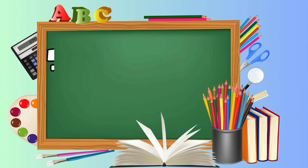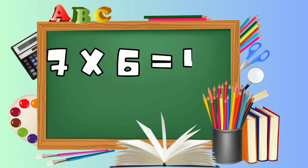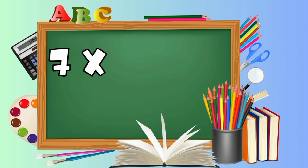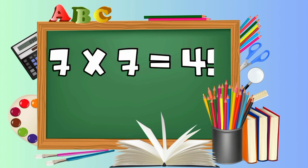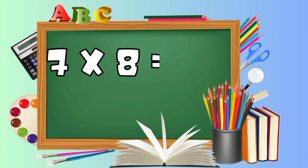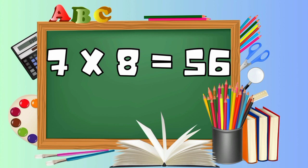7 5's are 35. 7 6's are 42. 7 7's are 49. 7 8's are 56.